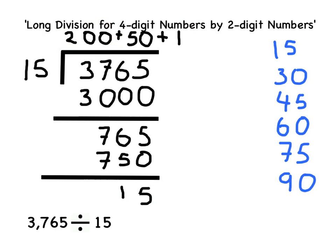200 add 50 add 1 equals 251. Therefore there are 251 15s in 3765. So 3765 divided by 15 equals 251.